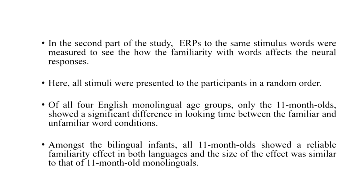In the second part of the study, ERP responses — event-related potentials — were measured. ERPs are electrical responses of the brain to specific types of stimuli and independent variable manipulations. ERPs to the same stimulus words — familiar versus unfamiliar — were measured to see how word familiarity affects brain responses. In the ERP study, all stimuli were presented to participants in random order, with familiar and unfamiliar words mixed.